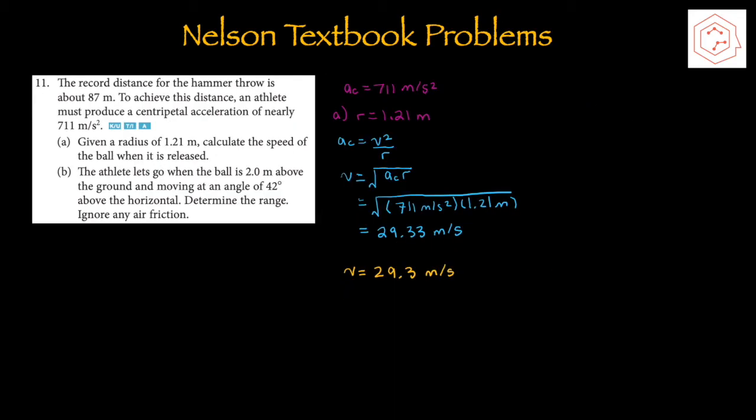Lastly, for question number 11: the record distance for the hammer throw is about 87 meters. To achieve this, an athlete must produce a centripetal acceleration of nearly 7.11 m/s². Part A gives a radius of 1.21 meters and asks for the speed of the ball when released. Using ac = v² / r and isolating for v, the required speed is 29.3 m/s.